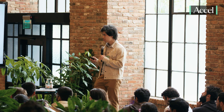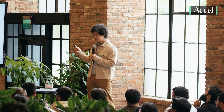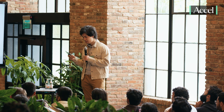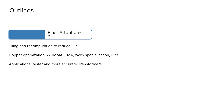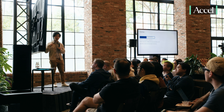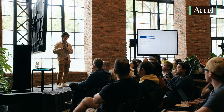So we need to scale to longer sequences, and in order to do that we've got to make attention a lot more efficient. I'll talk about our recent work, Flash Attention 3, targeting Hopper GPUs. I'll talk about some of the new features on modern GPUs that we want to pay attention to: things like asynchrony, warp specialization, low precision, and so on.